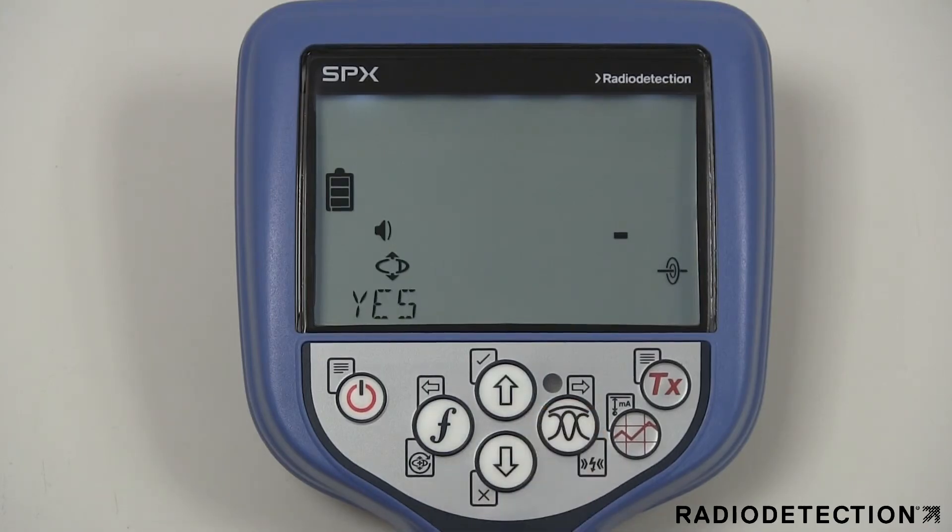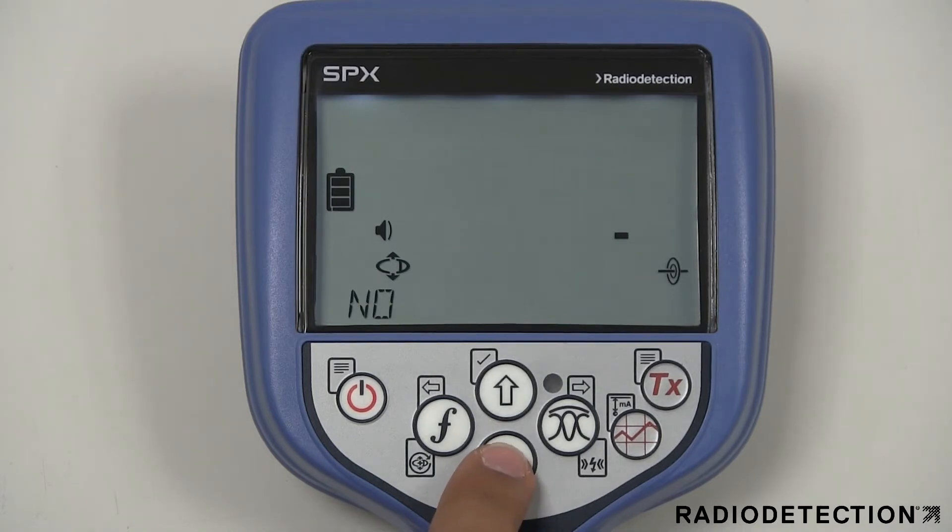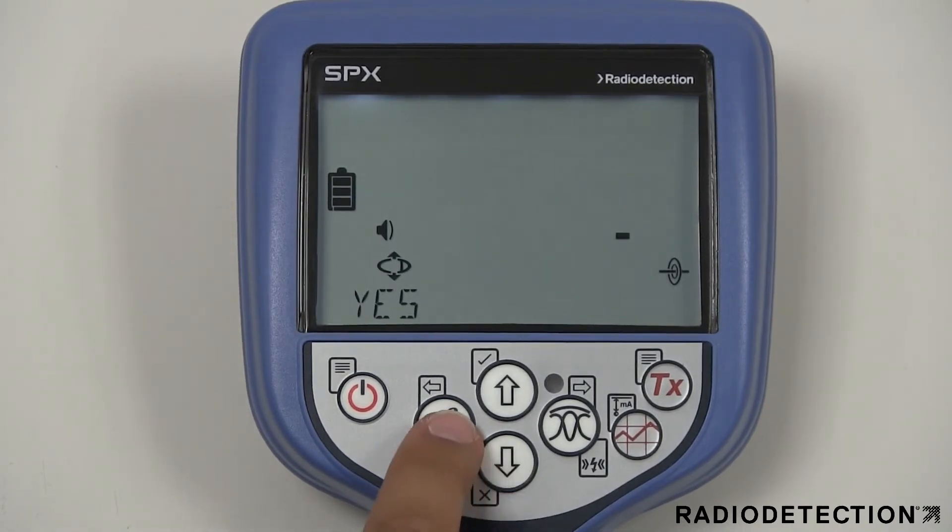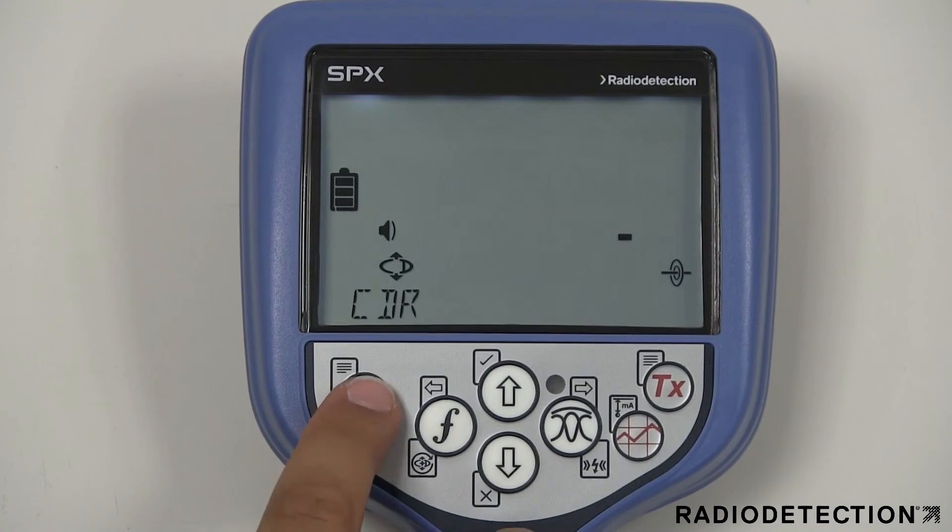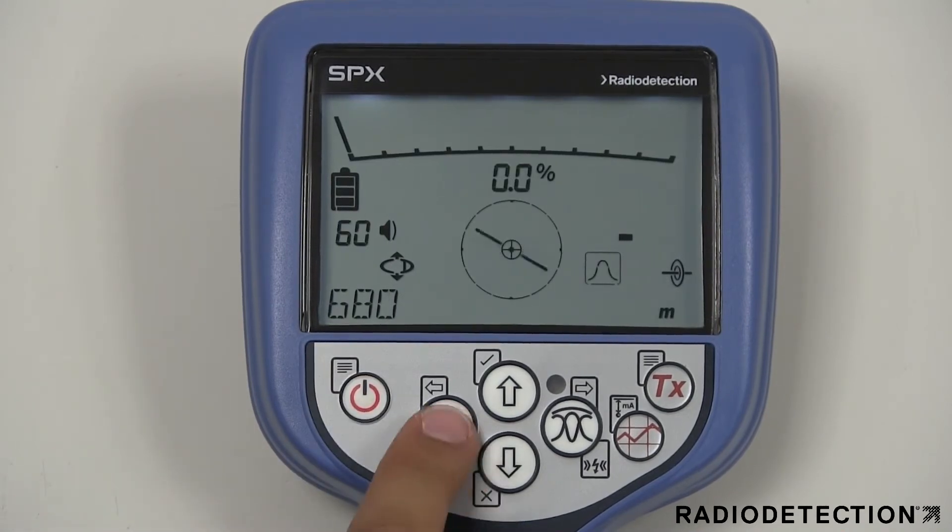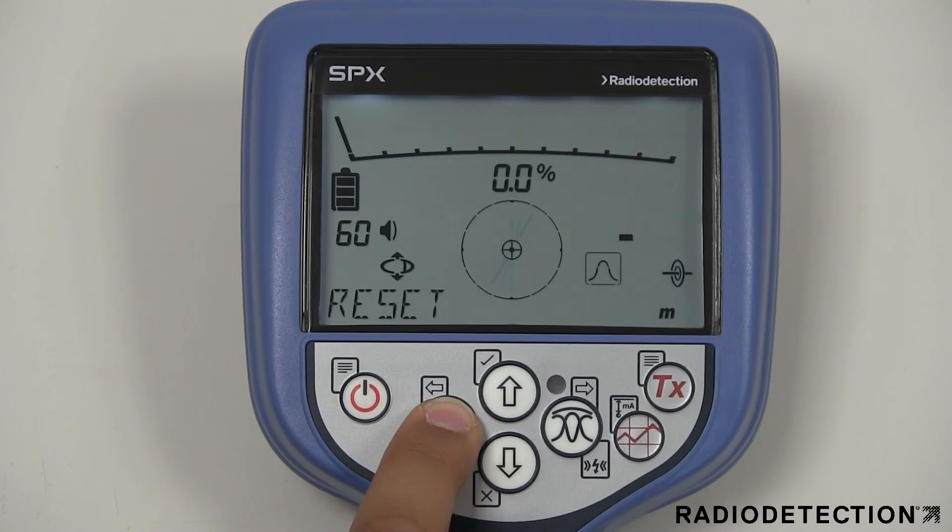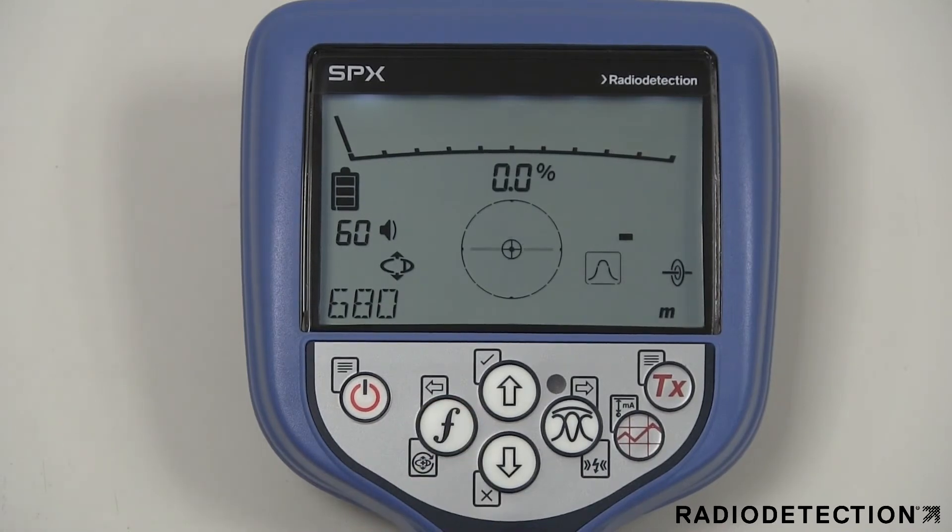The CDR mode can be used when using a current direction frequency. Before using current direction you should always use the CD reset option allowing you to find a new target utility. Alternatively, a shortcut to resetting CD is to hold down the F key when you are in a CD frequency.